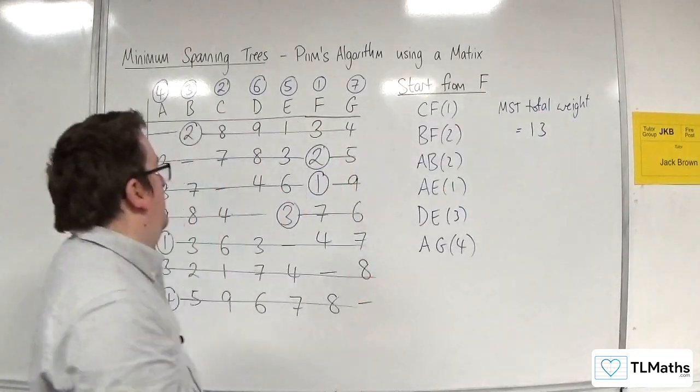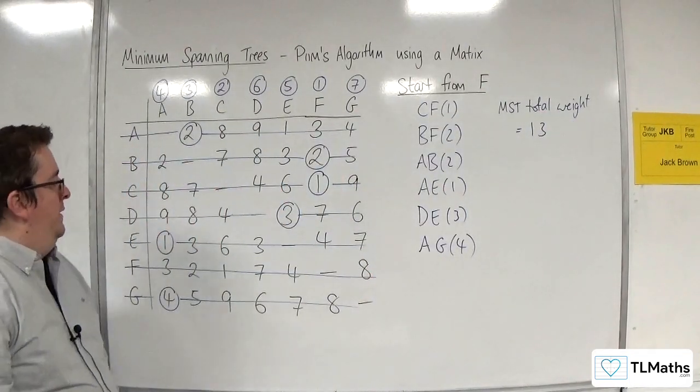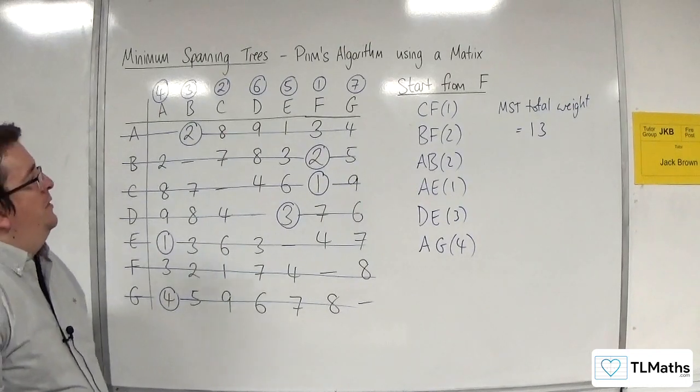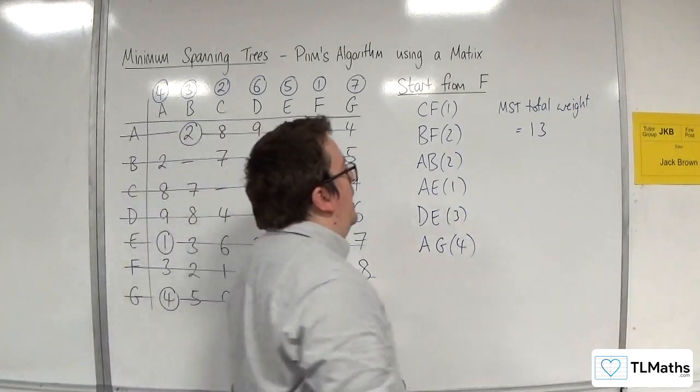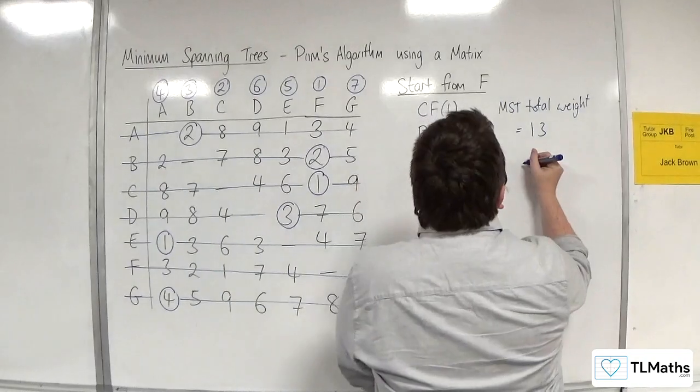Right. It's 13 is the minimum spanning tree total length. And let's say I need to draw the minimum spanning tree.